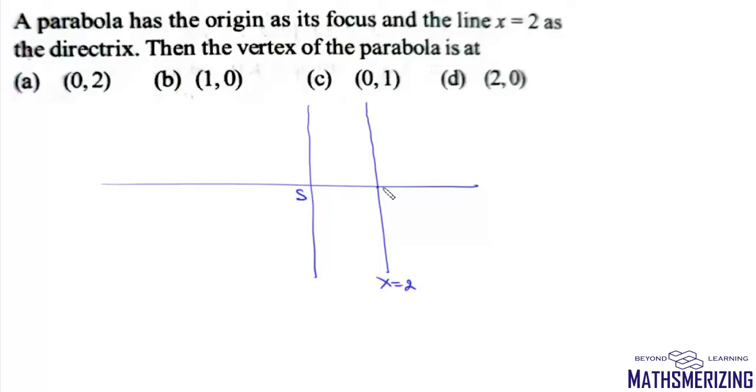We know that the base of the directrix in this case will be (2,0), and the vertex is the midpoint of the base of the directrix and the focus. So the vertex in this case will be at (1,0). The answer to this question is simply (b).